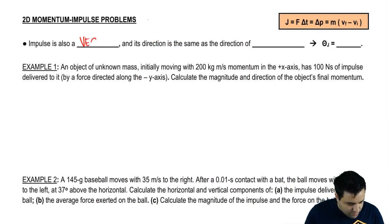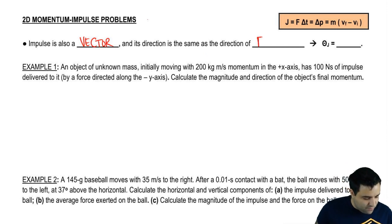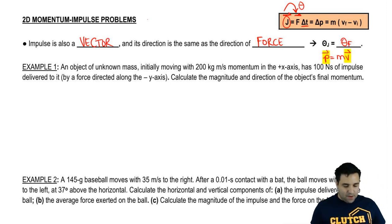Impulse is also a vector, and its direction is the same as the direction of force. There's a really easy way to see this. Impulse is force times time. Impulse is a vector, force is a vector, they both have direction. Time has no direction, so J has to get its direction from F. The direction of J is the same as the direction of F.